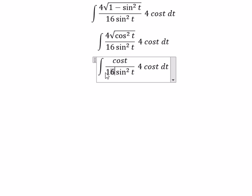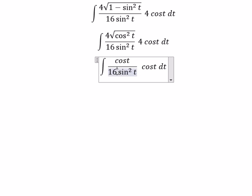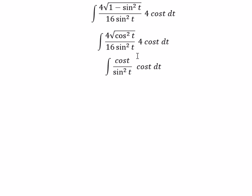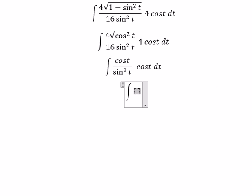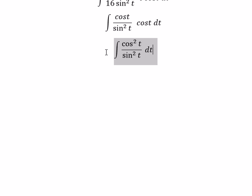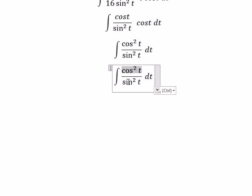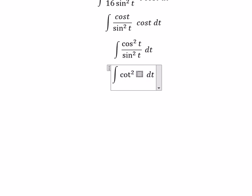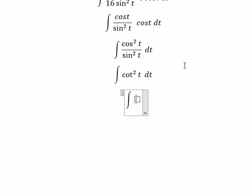We simplify, and combining the cos t terms we get cos t squared. Finally, we change cos t squared into cosecant t squared minus 1.